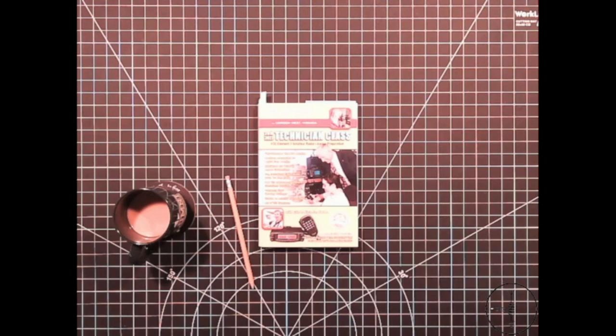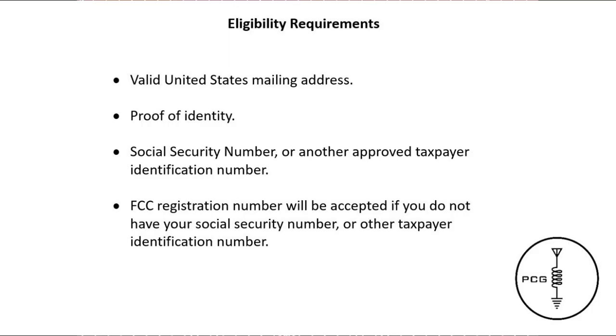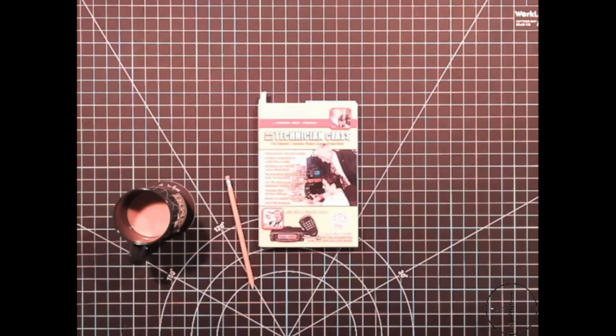Meeting the eligibility requirements for this exam is pretty easy. To take the test you need the following: a valid US mailing address, proof of identity, a social security number or another approved taxpayer ID number, or you can use an FCC registration number if you don't have a social security number or other taxpayer ID.